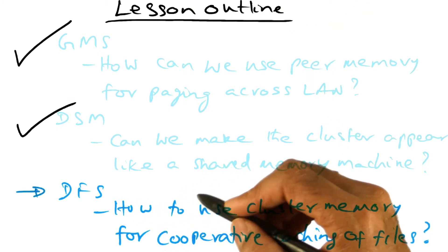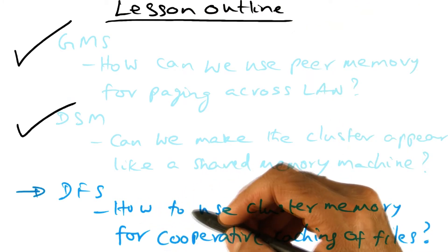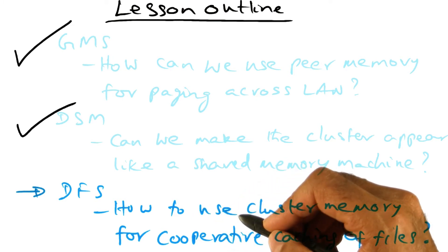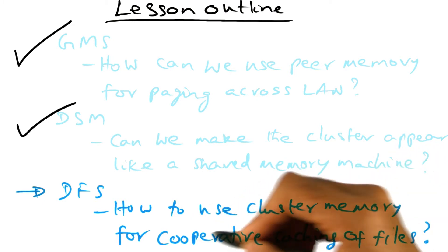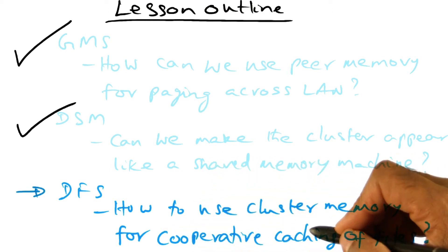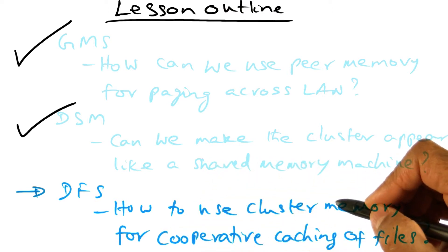DFS wants to intelligently use the cluster memory for efficient management of the metadata associated with files and for caching the file content cooperatively among the nodes of the cluster to satisfy future requests for files.